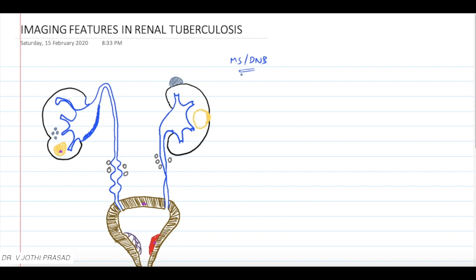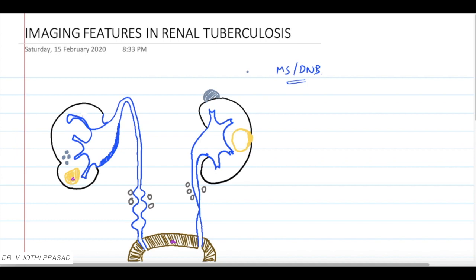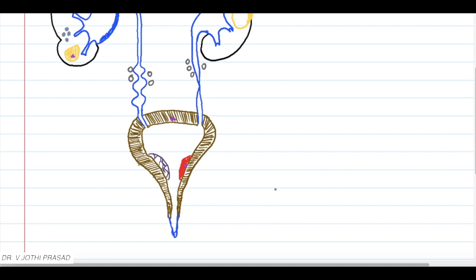Let me explain all these with an example. Let's go to the first topic: imaging features in renal tuberculosis. This question has been repeatedly asked in many MS and DNB examinations. Here I have made a diagrammatic representation of all the imaging features that occur in renal tuberculosis.